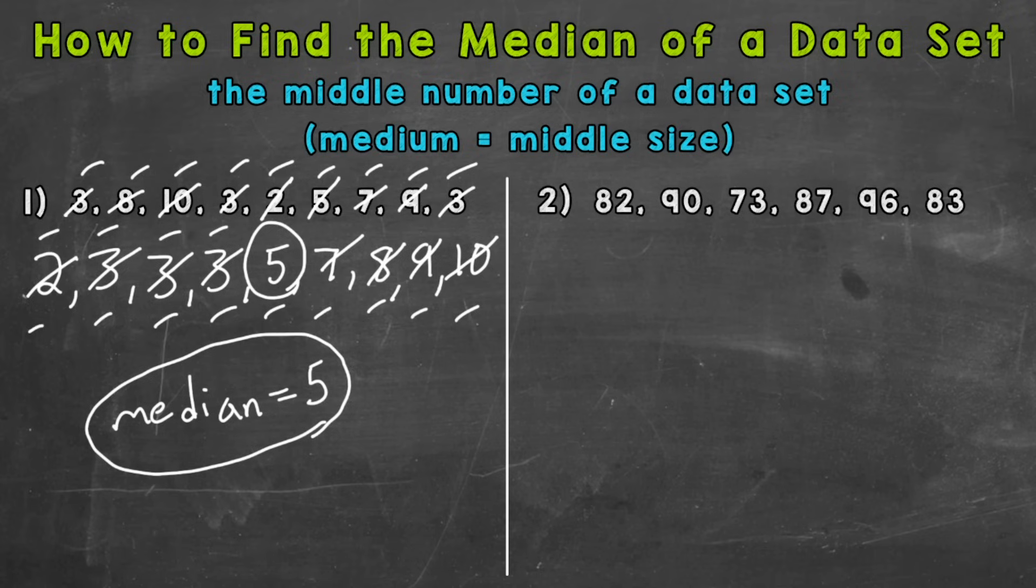So number two, again, first step, we need to put those numbers in order from least to greatest. So our smallest number in value is this 73. Next comes the 82. Then we have an 83, 87, 90, and 96.